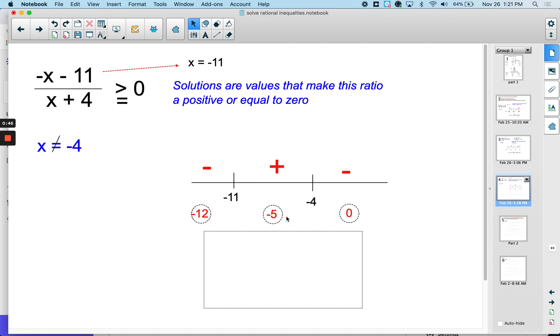I pick values in the intervals, and I test them into the inequality here. So when I plug negative 12 in here, I get 12 minus 11 is positive, negative 12 plus 4 is negative. A positive over a negative is a negative.